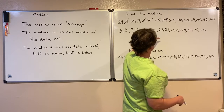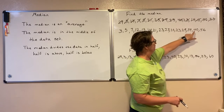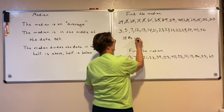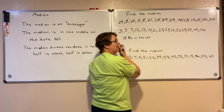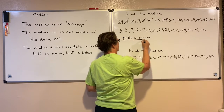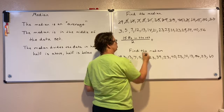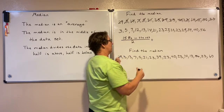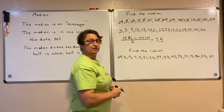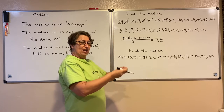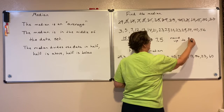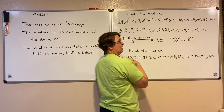Counting through: 1, 2, 3, 4, 5, 6, 7, 8, 9, 10, 11, 12, 13, 14, 15 — we have 15 numbers there. We can literally cut that in half and see where the middle is. So if I divide by 2: 15 divided by 2 is 7 and a half. I'm going to round that up to the very next number, so the 8th one is going to be my median.